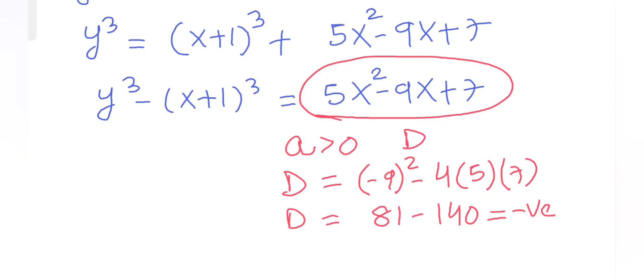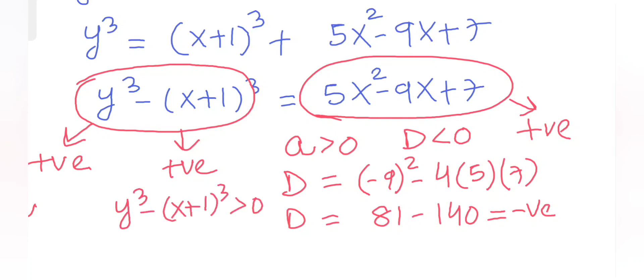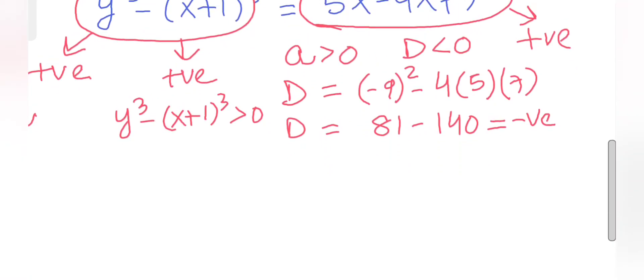So D is negative, which means this quadratic equation is positive for all values of x. Therefore, this side must be positive. It means y³ minus (x+1)³ must be positive, and y is greater than x+1. From this we can conclude equation 1.